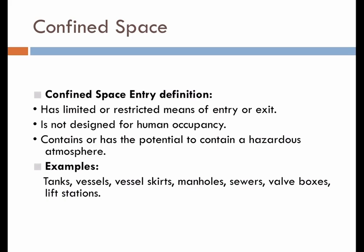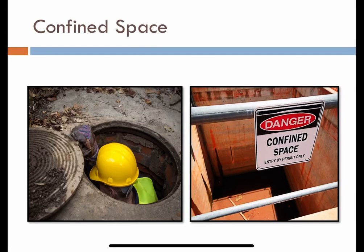Areas above floating roof tanks where the top of the roof is more than four feet below the rim of the tank are also considered confined spaces. Some examples are shown in the pictures — the picture on the left is of a manhole and the right one is of a lift station; these are good examples of confined spaces.